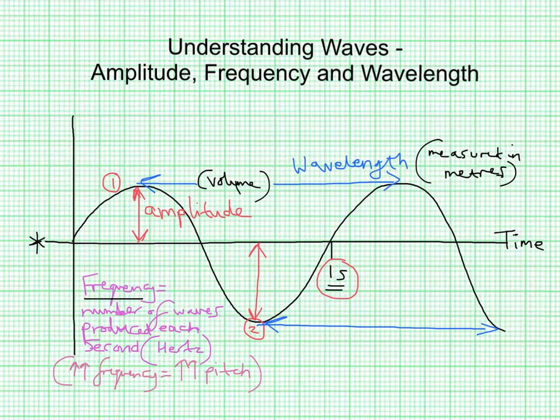You can see, hopefully, how the two relate. If there are more waves that pass a point or are produced each second, and the frequency goes up, that would then mean that the wavelength essentially would go down. The distance between those two points and the wavelength would be shorter, because the waves would be closer together if the frequency were greater.